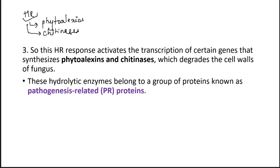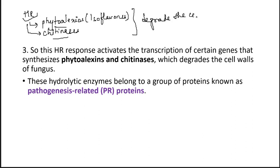Phytoalexins are specific kinds of chemicals. Their nature is that they are isoflavones, which we already studied when doing secondary metabolites. They are produced in response to microbial attack. HR response helps in the synthesis of phytoalexins and chitinases, and they degrade the cell wall of the fungus. Chitinases, as the name says, destroy the chitin structure of the fungus. Chitin is a composition of the cell wall of fungus, and chitinases break down this chitin.